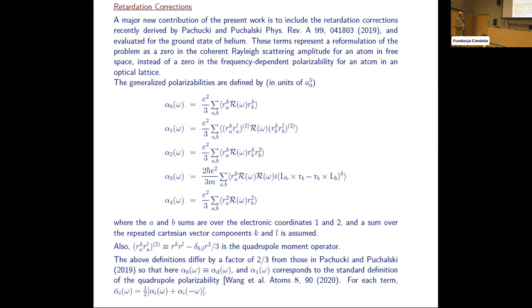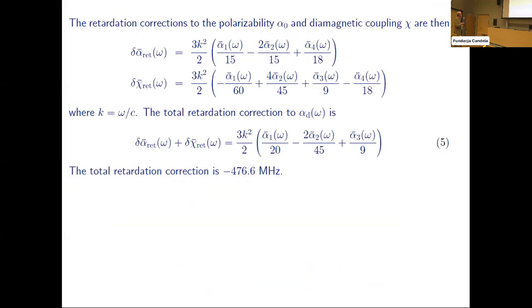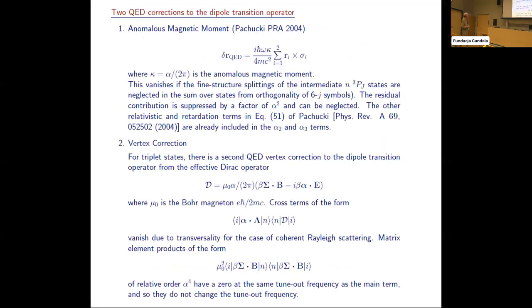And finally, retardation corrections. We took the results directly from the Puchalski and Puchalski paper for these generalized polarizabilities. For alpha zero, this is the ordinary dipole polarizability. This is the quadrupole polarizability term. This is a finite wavelength correction. And this is a relativistic correction to the dipole transition operator itself. And this is a magnetic term, but in fact, this cancels out when you calculate the total. There's a retardation correction to both the polarizability and the magnetic susceptibility with the alpha to the four terms. You have pluses, you have minuses, so these cancel. Total retardation correction is quite large, minus 476 megahertz.